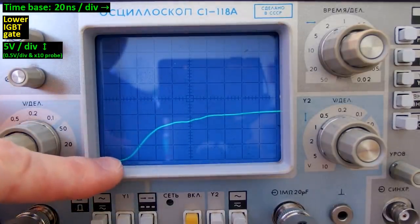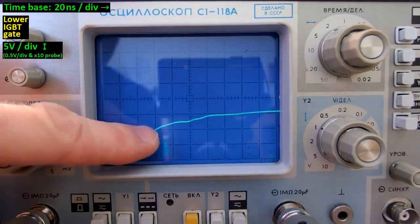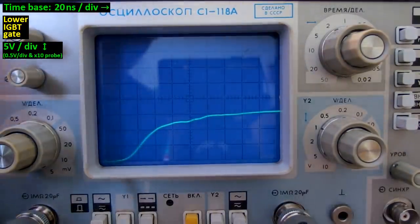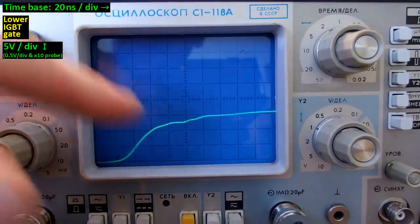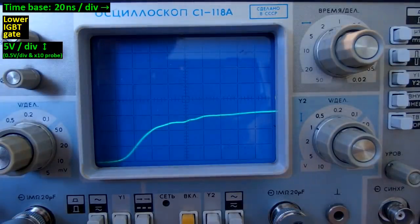And the rising edge on the gate is much faster now. It was about 200 nanoseconds and now it's about 40 nanoseconds. So, with the current amplifying transistors, both the rising edge and the falling edge are about 5 times steeper. It's charging and discharging the gate 5 times faster.